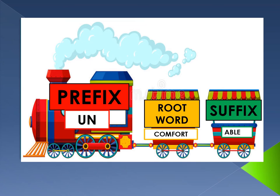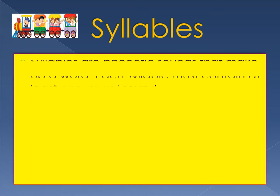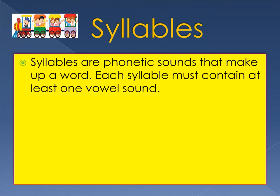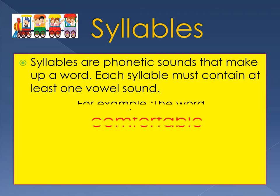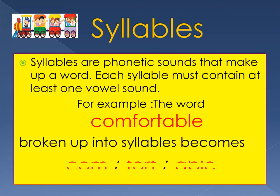Today we are going to be learning about prefix, root word, and suffix. An example of a prefix is 'un', an example of a root word is 'comfort', and an example of a suffix is 'able'. Together all three are put together to give you 'comfortable'. Syllables are phonetic sounds that make up a word. Each syllable must contain at least one vowel sound. For example, the word 'comfortable' broken up into syllables becomes 'com-fort-a-ble'.